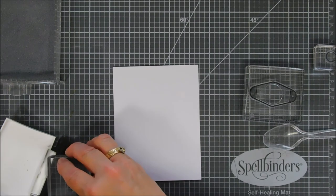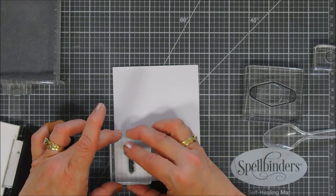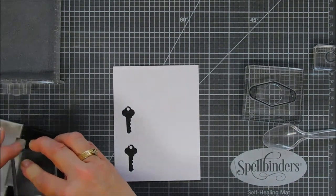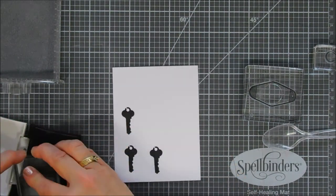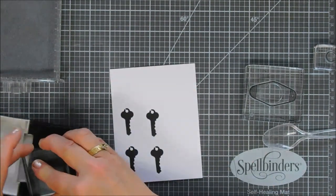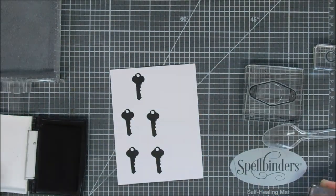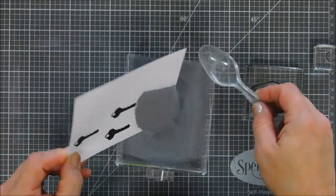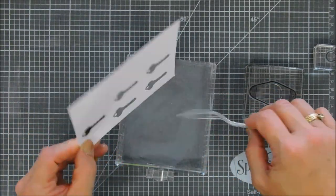Okay now we're going to stamp our key. We have five keychains so we're going to need five keys. I'm using the same VersaFine Onyx Black ink to stamp these keys and then I'm also going to use the same silver embossing powder go over them and we'll use the heat gun and melt these as well.